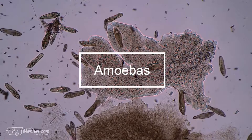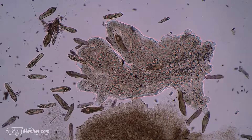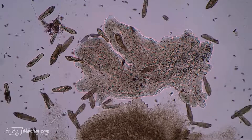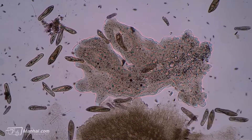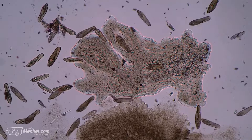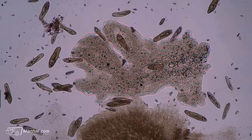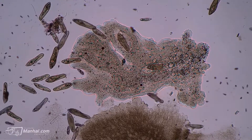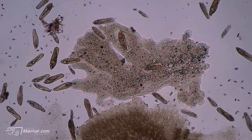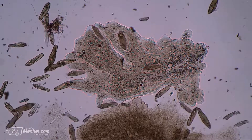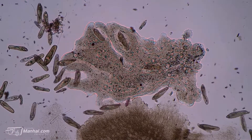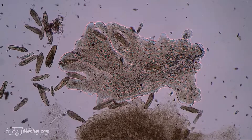Amoebas. The amoeba moves slowly in water by extending its cell membrane and cytoplasm. Therefore, an amoeba has no definite shape. Some species of amoebas are parasites, such as the species that cause dysentery in humans.